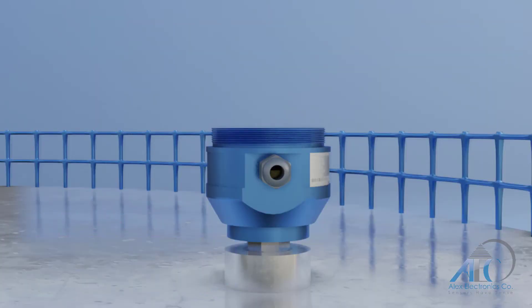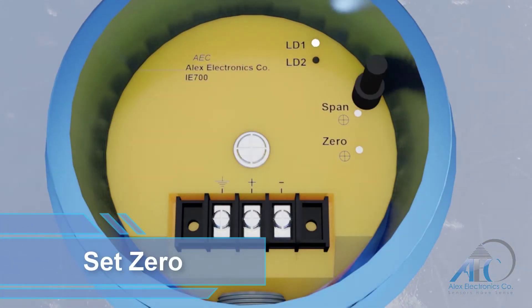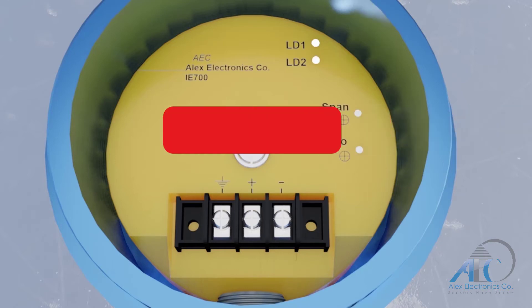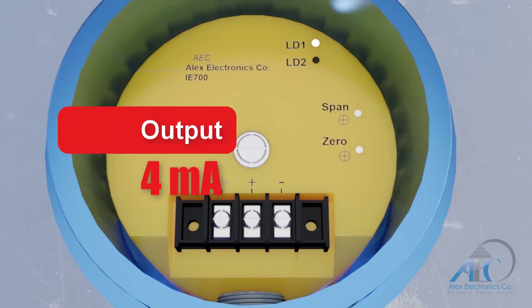To set the zero, put the magnetic pen near the zero programming circle for about three seconds until the programming LED labeled LD2 starts flashing, then remove the pen immediately. At this point the output signal is 4 milliampere.